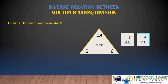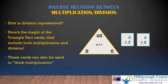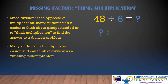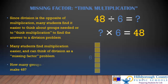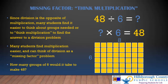So how is division represented with these triangle fact cards? Here's the magic of the triangle fact cards — they include both multiplication and division. These cards can be used to think multiplication. Since division is the opposite of multiplication, many students find it easier to think about groups needed, or to think multiplication, to find the answer to a division problem. So if I'm thinking about 48 divided by 6, many students find multiplication easier and they would think of it as a missing factor problem. We might think of this as: how many groups of 6 would it take to make 48? Students explored array models earlier, so they hopefully will know that 6 times 8 or 8 times 6 gives the product of 48.